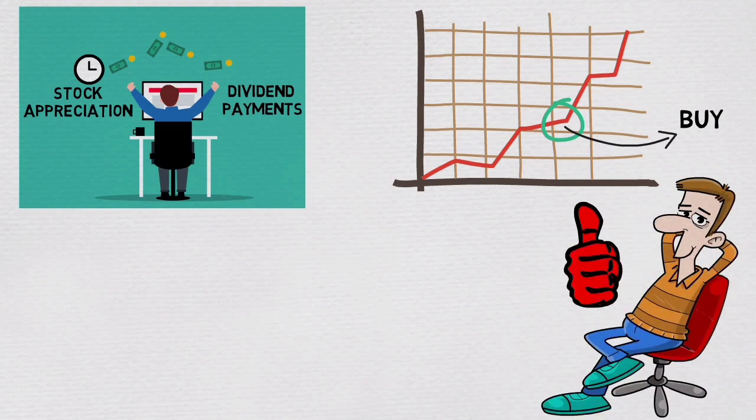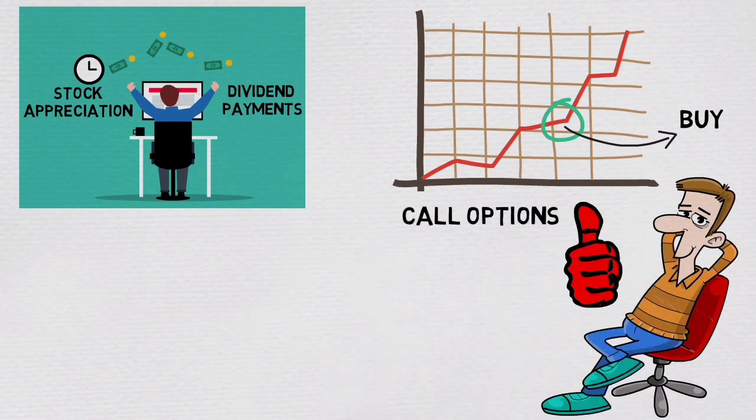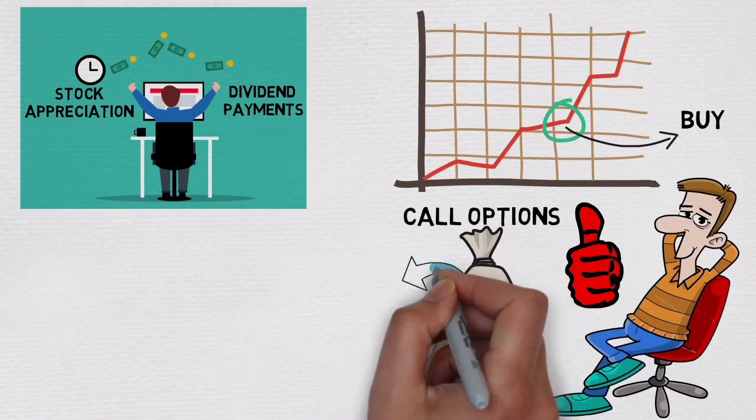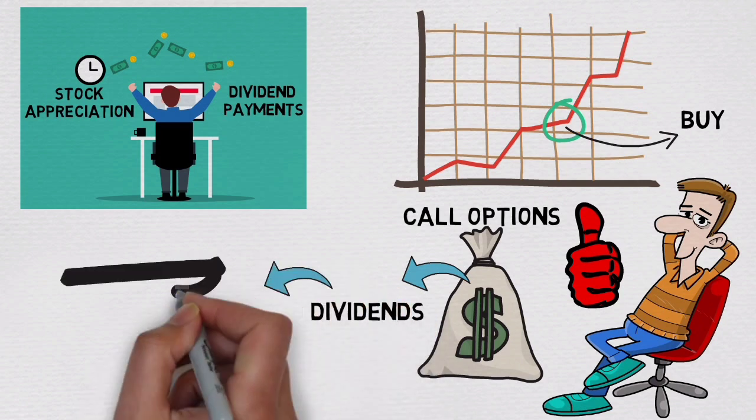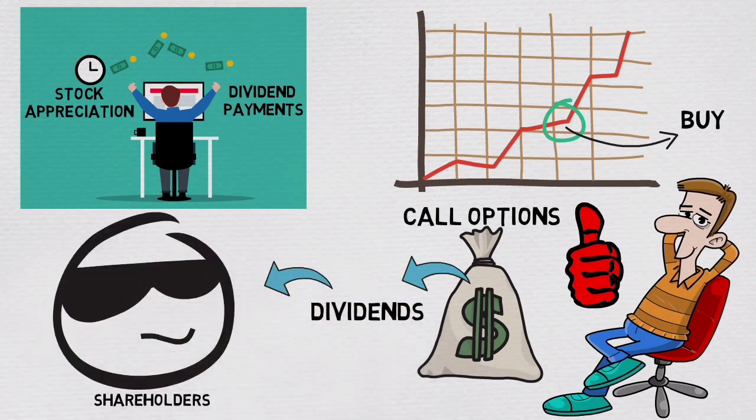So, in this case, when the ETF sells call options on the same stocks of its portfolio, it receives income and that income is paid as dividends to the shareholders.